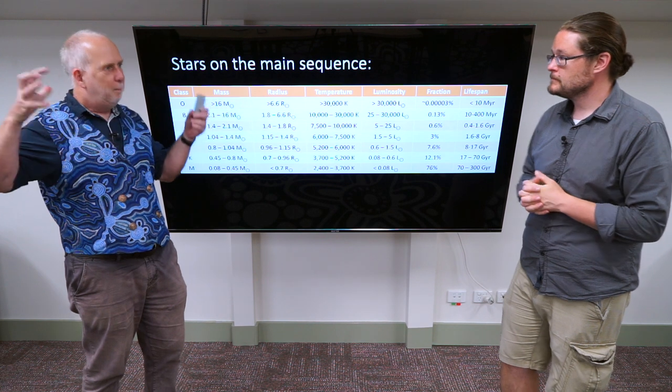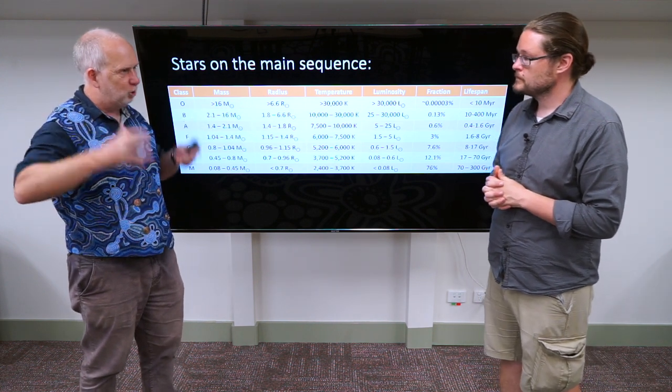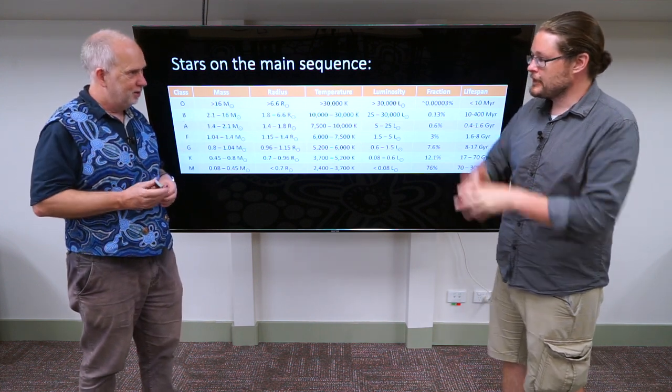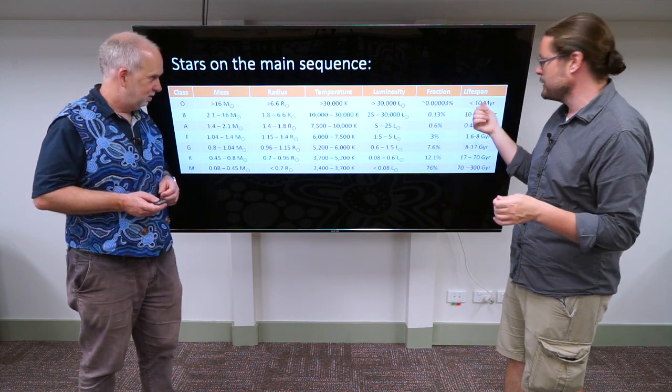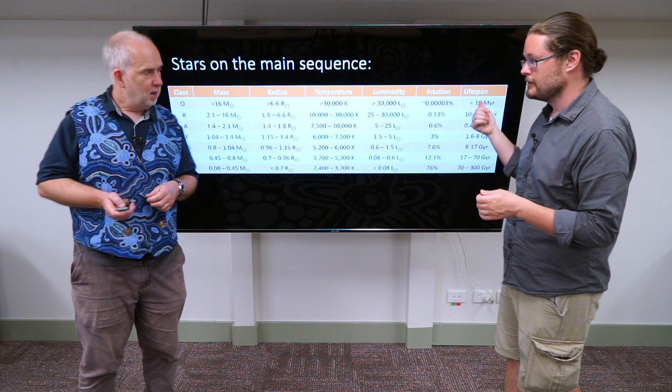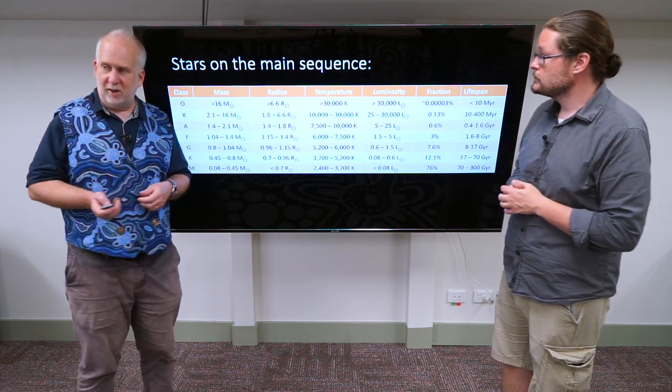Basically because there's such a huge mass pushing down on the middle, it allows it to get much hotter and burn much faster. So instead of that 9 to 10 billion year main sequence that our Sun goes through, these are doing it in less than 10 million years, and in fact you can see some of these really hot stars.